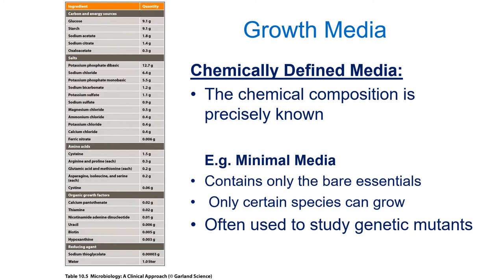Most bacteria can manufacture the majority of the amino acids they need, but a few must come from the environment — those are included in minimal media, while amino acids they can make themselves are not. We quite often use minimal media to identify genetic mutants. If a bacterium has a mutation in a gene coding for an enzyme needed to make a particular amino acid, it will not survive on minimal media.